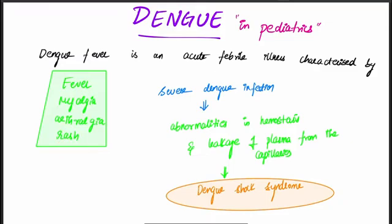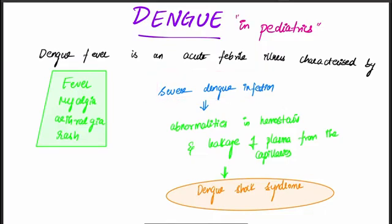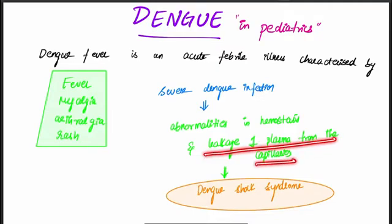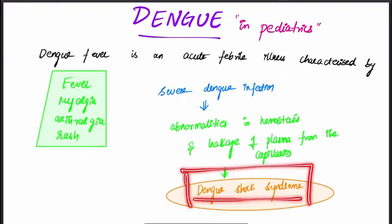There are certain points which differentiate Dengue fever from severe Dengue infection. In severe Dengue infection, there will be abnormalities in hemostasis as well as leakage of plasma from the capillaries. If these two features are present, it is called Dengue shock syndrome.